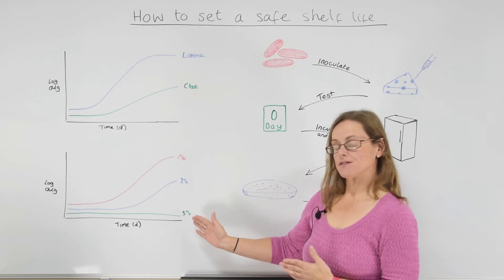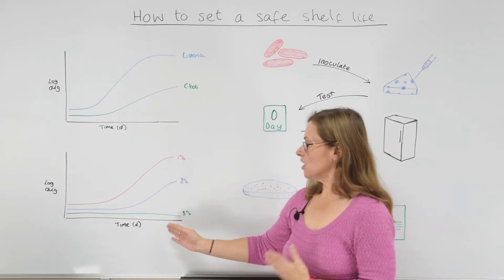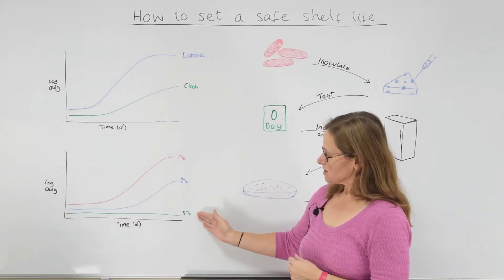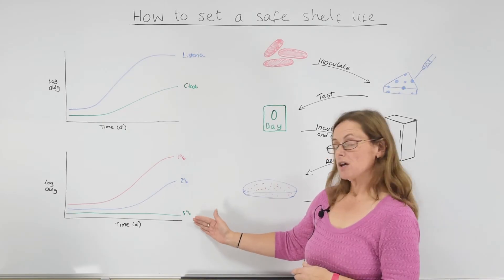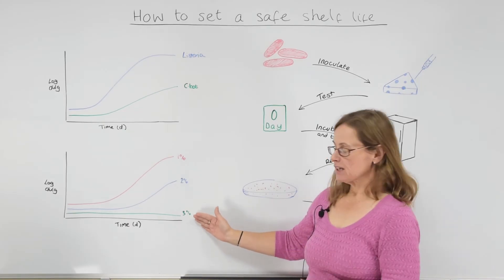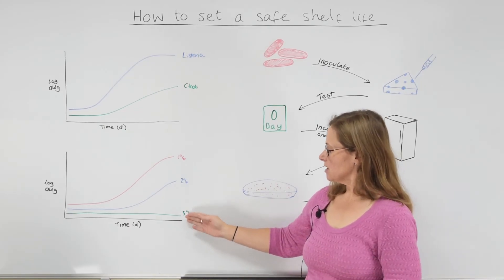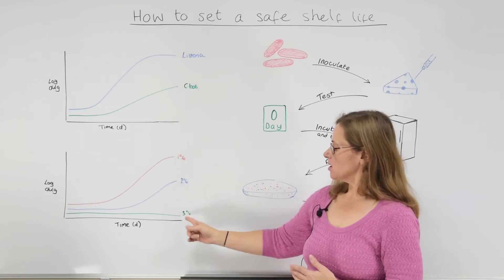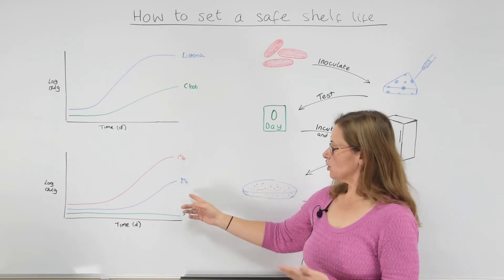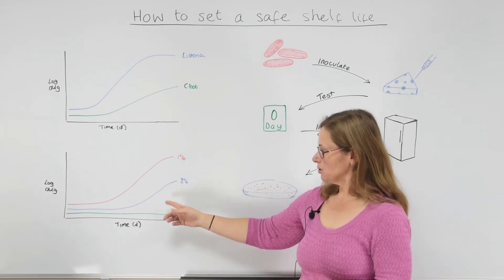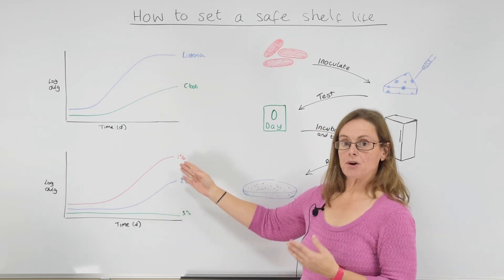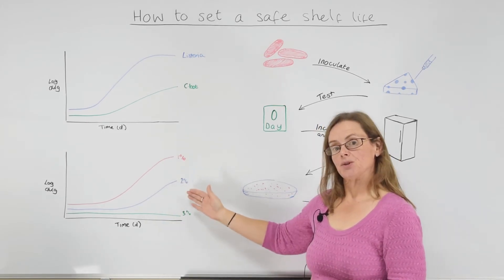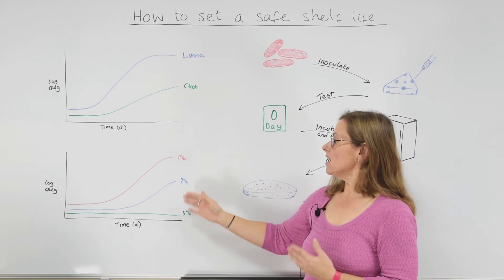So what we have got here is a graph that shows again time and the numbers, and we have got say three different salt levels - but equally we could have three temperatures or three pHs. So we have got three, two, and one percent salt. So no growth at three percent but if you drop this to two you do get growth. Much faster growth at one percent. So you can see if that is going to affect growth.